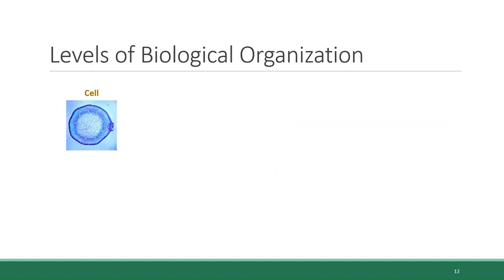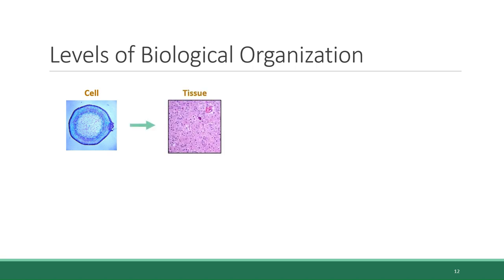All living things are made of cells. In some organisms it stops there, because some organisms are made of just a single cell, like bacteria or that paramecium we saw a few slides back. However, in larger multicellular organisms, cells are organized into tissues — for example, human skin or muscle tissue. Then tissues are organized into organs and organ systems, like the nervous system or respiratory system, and those organs are found nested within the organism.